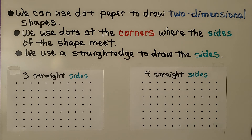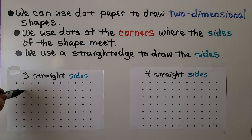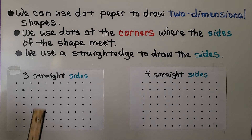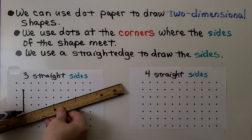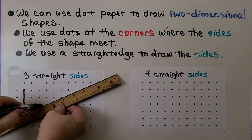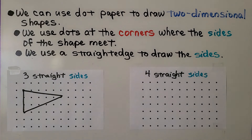We can use dot paper to draw two-dimensional shapes. We use dots at the corners where the sides of the shape meet, and we use a straight edge to draw the sides so we know they're straight. This is telling us we need three straight sides, so we start with a dot for a corner, use our straight edge to make one side, meet at a dot, and connect for a total of three sides. I made a triangle.